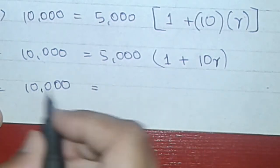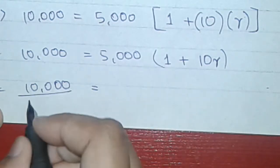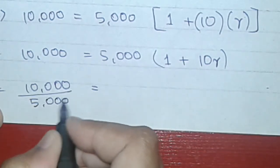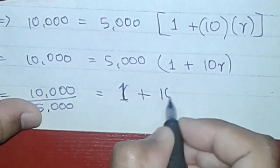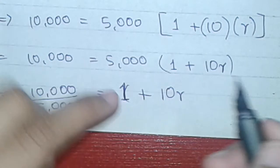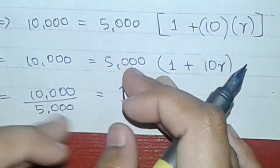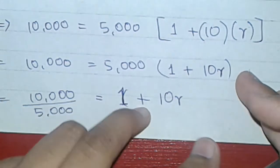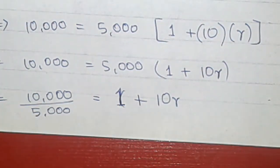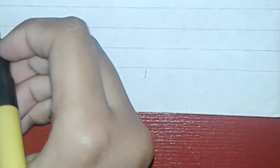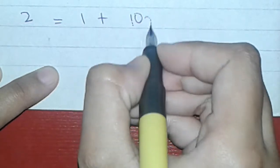Now it will be 10,000 or 5,000. We divide the same. I will divide it here and the answer is 2, and the answer is 1 plus 10r.